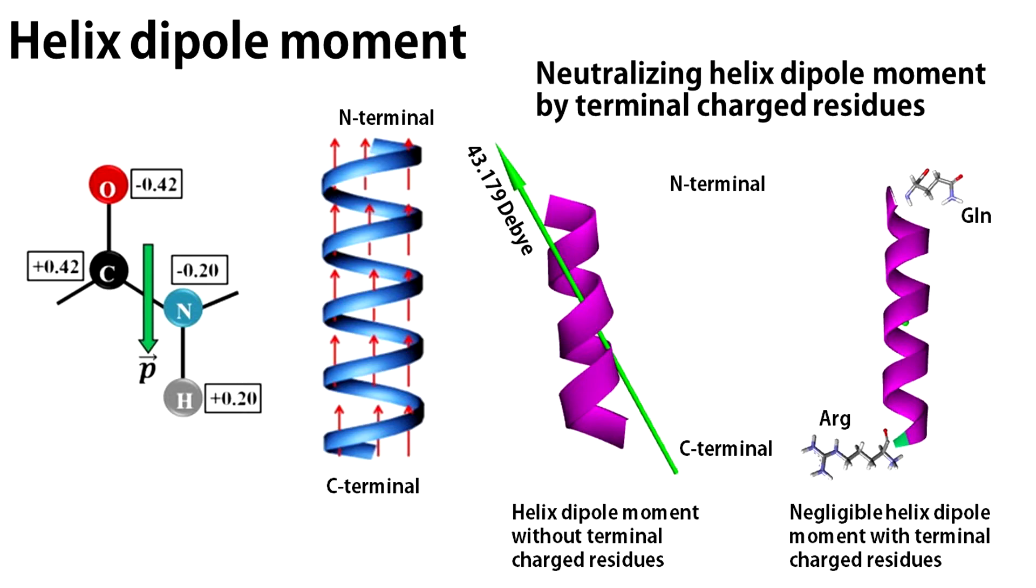However, the effect of this dipole can be neutralized by placing 0.5 to 0.7 positive unit charge near the C-terminus and 0.5 to 0.7 negative unit charge near the N-terminus of the helix. This is why biological proteins having compact 3D structures have evolved to exhibit a positive charge residue at the C-terminus and a negative charge residue at the N-terminus of helices.